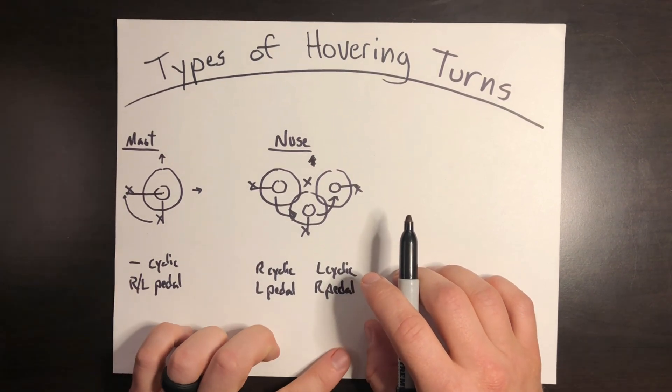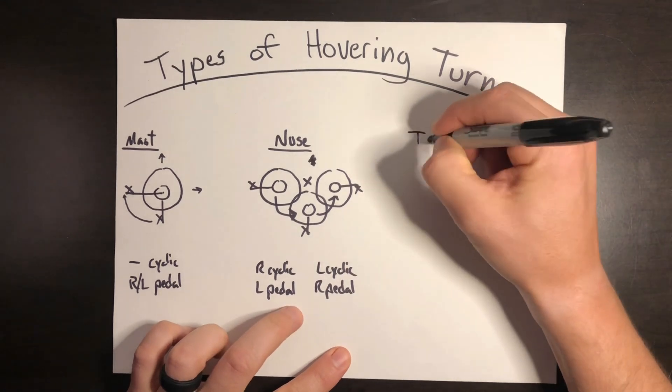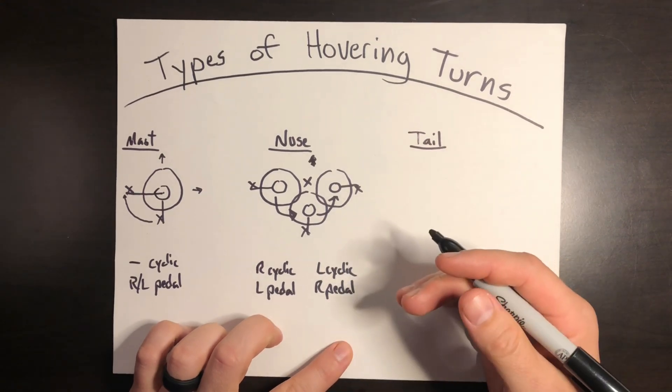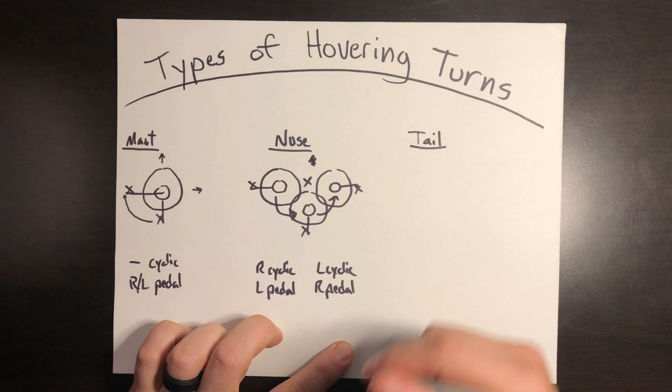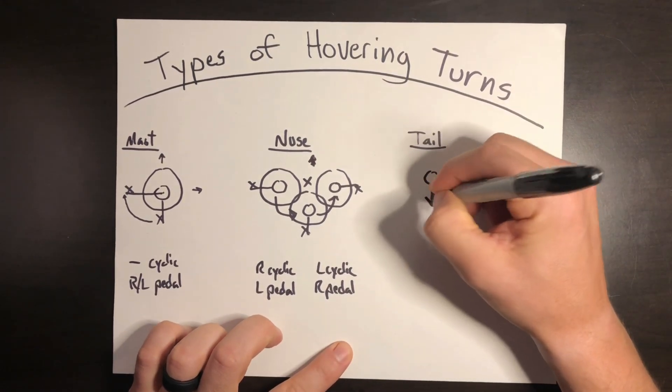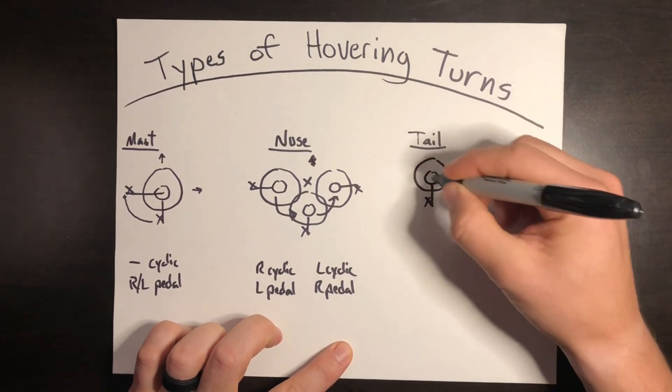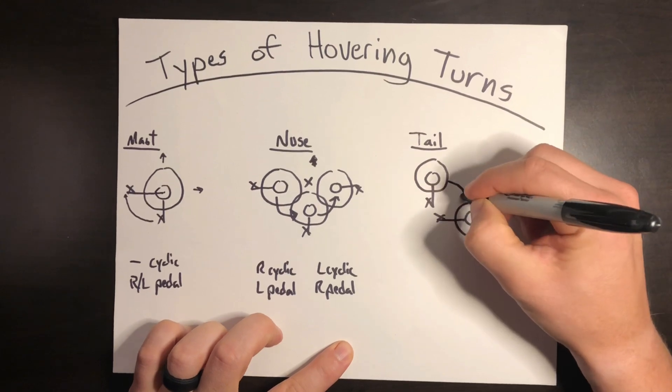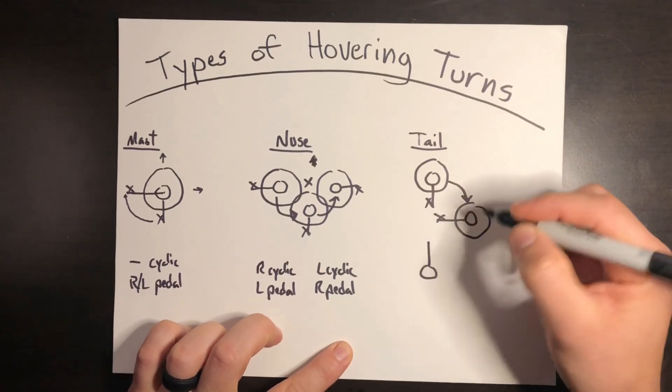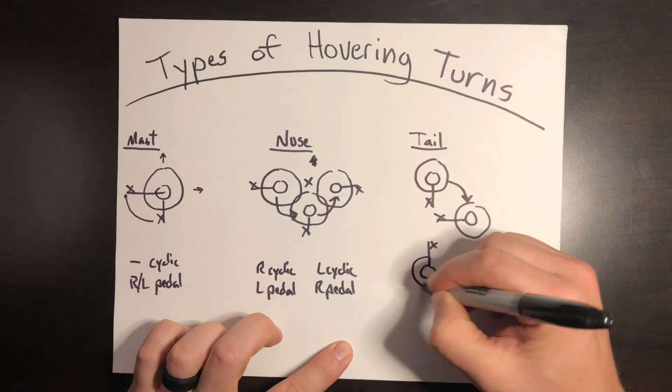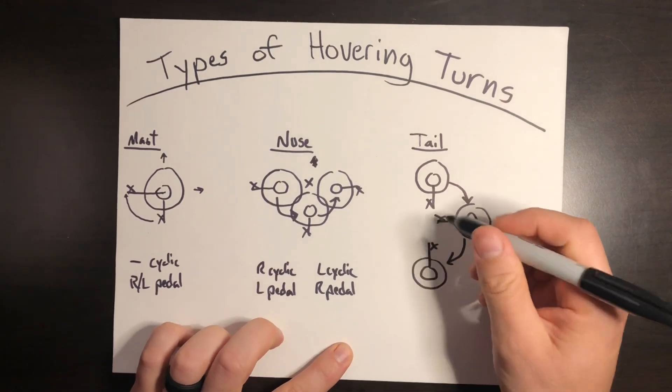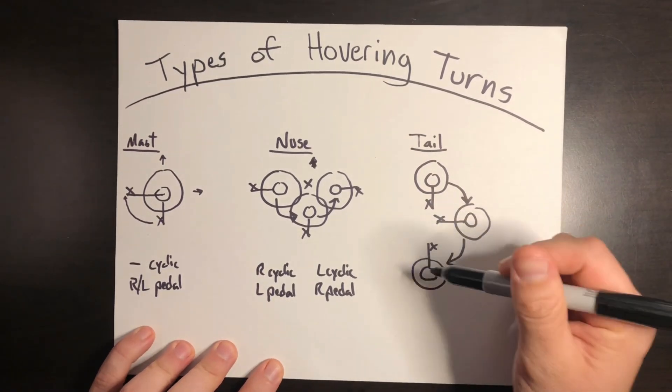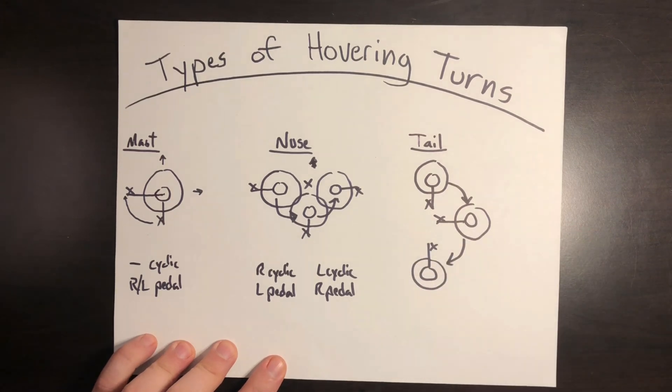The last type of hovering turn is a turn about the tail. Just as the name implies, this is a turn where imagine the tail rotor is the pivot point, a fixed position. Say I have my helicopter right here and I want to turn around to the right, moving like this, and maybe all the way back around. This is going to keep your tail rotor in a fixed position throughout the turn and it uses non-opposing inputs.